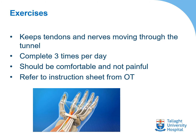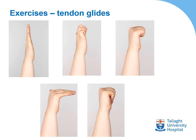We'll also give you some simple exercises to keep the tendons and the nerves moving within the tunnel. We'll ask you to complete them three times every day. They should be very simple to do, comfortable, and not painful. The first exercises keep the tendon moving within your carpal tunnel — a sequence of five movements: start with your fingers stretched up straight, move them into a hooked position, then roll down into a full fist, then stretch your fingers out straight in a flat position, and then bring your fingertips down to touch your palm with your nails showing. You'll have an instruction sheet with these pictures in your pack.